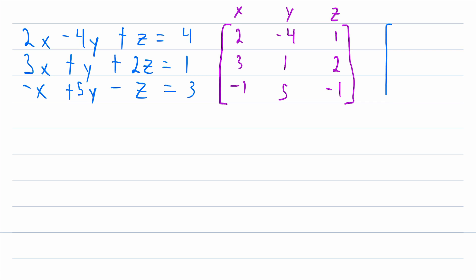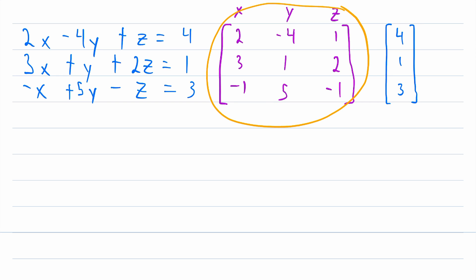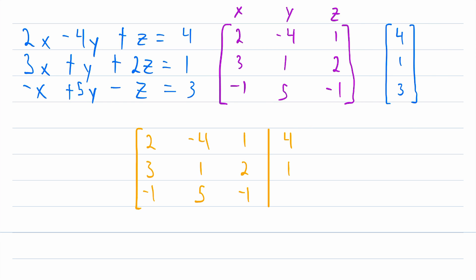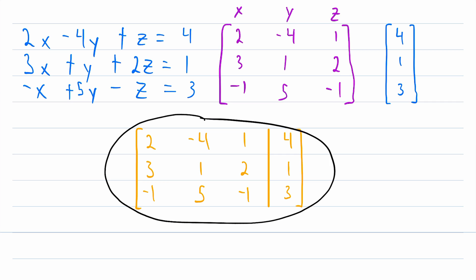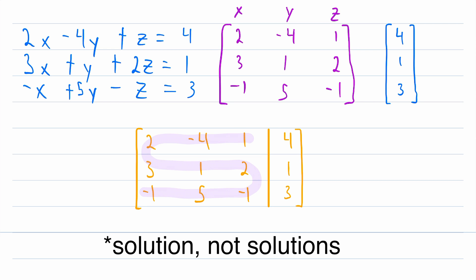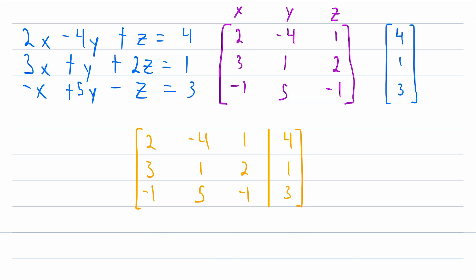Then we can also have a matrix with the constants: four, one, and three. Then we can augment our coefficient matrix with the constants matrix, giving us this augmented matrix. So that's pretty cool, and one of the best uses for augmented matrices.